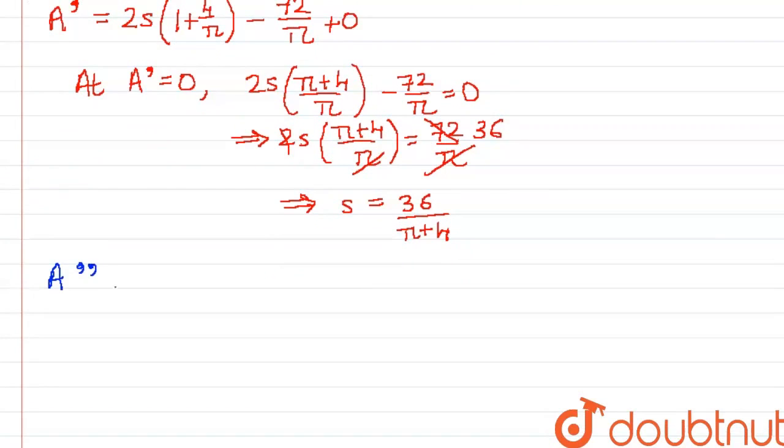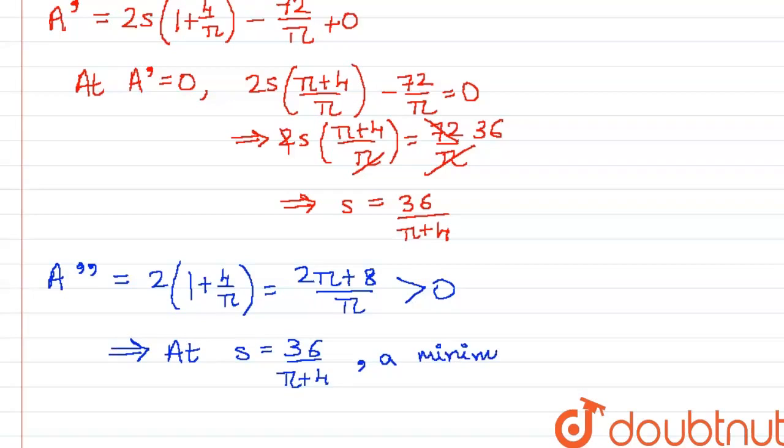This corresponds to an extremum. The second derivative will be 2 times (1 plus 4/π) which is (2π plus 8)/π, which is always positive. Hence the extremum obtained at s equals 36/(π plus 4) is a minimum.